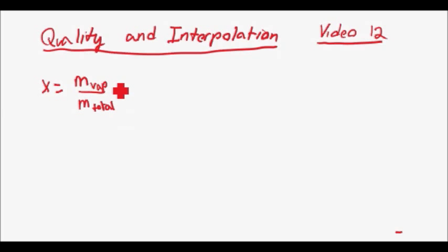To have quality, you need to be somewhere within the vapor dome, which we have seen in previous videos. So let's say you're somewhere around over here. And this mass total term is the mass of the fluid plus mass of the gas or vapor.